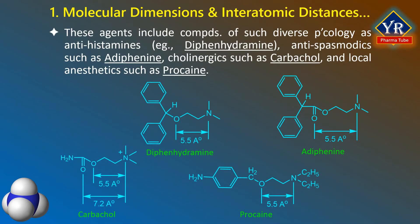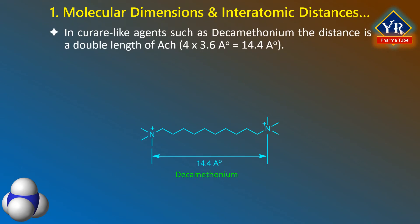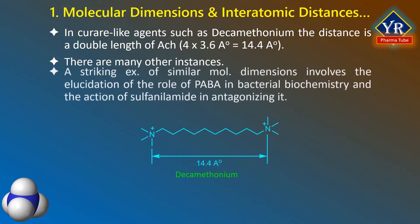It is possibly more than coincidence that a considerable number of drugs have functional groups believed to be involved in receptor complexation that are separated by distances that are multiples of the previously stated dimensions. These agents include compounds of such diverse pharmacology as antihistamines such as diphenhydramine, antispasmodics such as ediphanine, cholinergics such as carbacol, and local anesthetics like procaine. The 3.6 angstroms distance is also encountered in drugs having a quaternary cationic nitrogen — for example, carbacol has 7.2 angstroms. In curare-like agents such as decamethonium, the distance is 4 × 3.6 angstroms, equal to 14.4 angstroms.